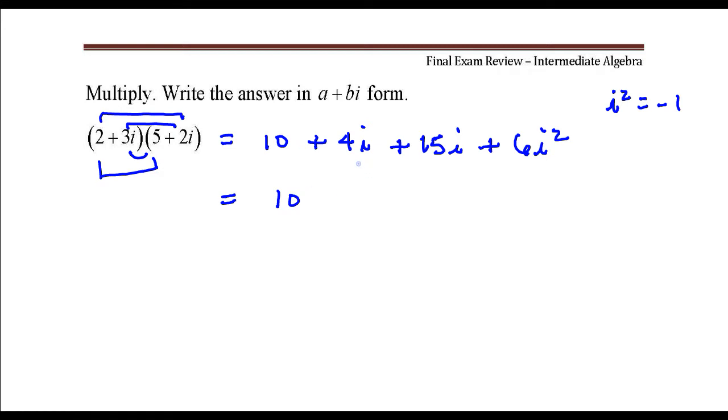10 plus 4i plus 15i, that's 19i. And then I'll replace i squared with negative 1. So I have 10 plus 19i minus 6.